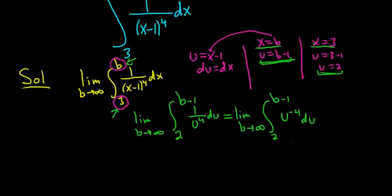So now we can use the power rule to integrate. So again, we still have the limit sign. So limit b goes to infinity. And we're integrating. So we're going to drop the integral sign. We're going to drop the du. So we're adding 1 to the exponent. So that will be u to the negative 3 over negative 3. And we're going from 2 to b minus 1.